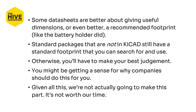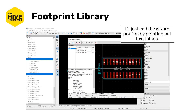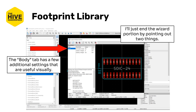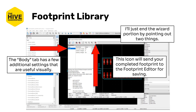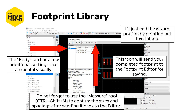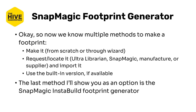Given all this, we're not actually going to complete making this part — it's really just not worth the time to figure all this out, otherwise I'm just giving you numbers which isn't the point. I'll end this wizard portion by pointing out two things: first, there's a body tab with some additional settings that are useful visually, and second, this icon here will send your footprint to the footprint editor for saving once you've finished in the wizard. Don't forget to use the measure tool to confirm your sizes and spacings after sending it to the editor.